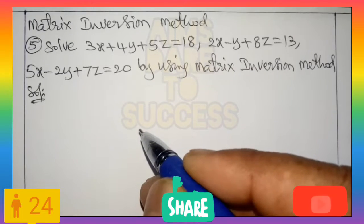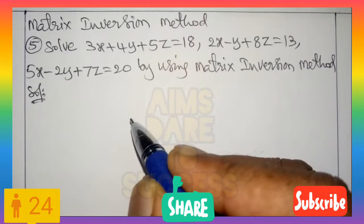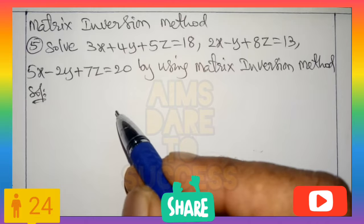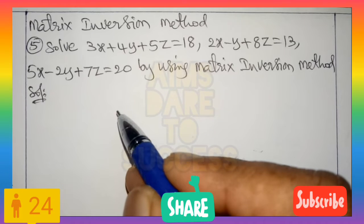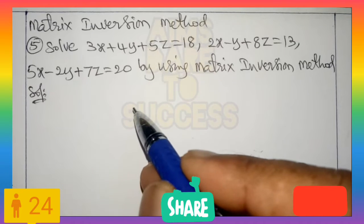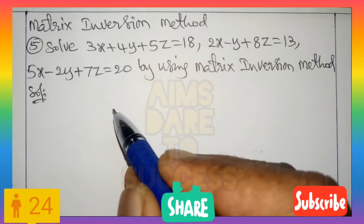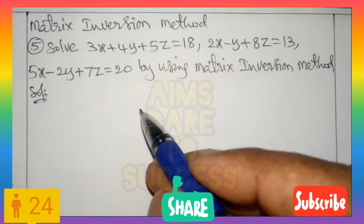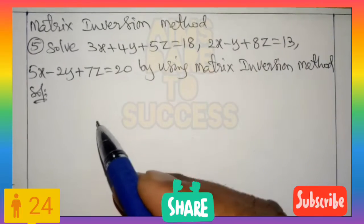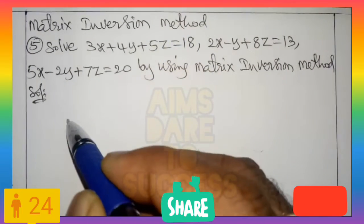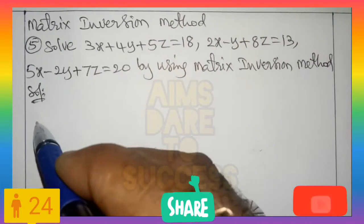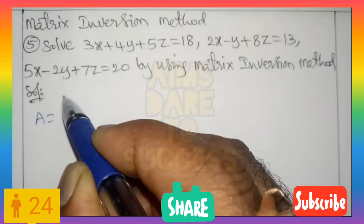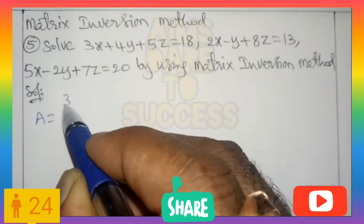Hi, Hello, Namaste. Welcome to AIM's Dare to Success YouTube Channel. Today we are discussing about the Matrix Inversion Method VIP Question — a very important previous exam question. Solve: 3x + 4y + 5z = 18, 2x − y + 8z = 13, 5x − 2y + 7z = 20.